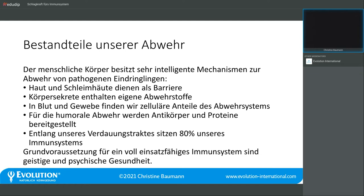Was wir unbedingt im Kopf haben sollten: Grundvoraussetzungen für ein voll einsatzfähiges Immunsystem sind geistige und psychische Gesundheit. Wir wissen aus der Psychoneuroendokrinoimmunologie, dass die seelische Gesundheit essentiell dafür ist, wie gut wir aufgestellt sind und uns verteidigen können. Wir wissen auch, dass Angst davor, krank zu werden, das Risiko erhöht, tatsächlich zu erkranken. Das heißt, wir tun sehr gut daran, uns auch seelisch zu stärken, vor allen Dingen in herausfordernden Zeiten.